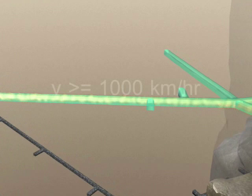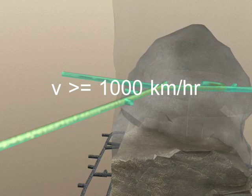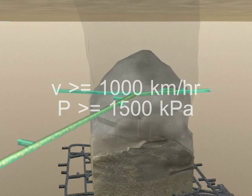Subsequent modelling estimated that the air velocity was over 300 metres per second or over 1000 kilometres per hour, pressurised up to 15 atmospheres or over 1500 kilopascals.